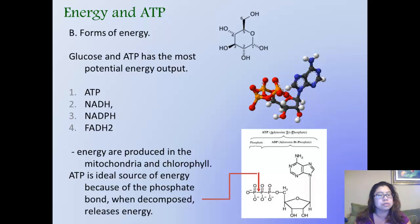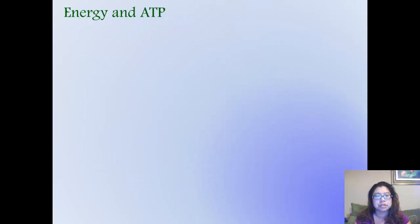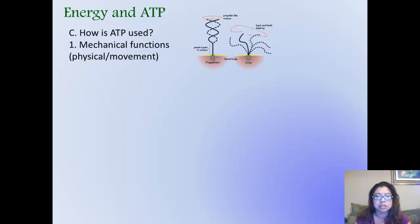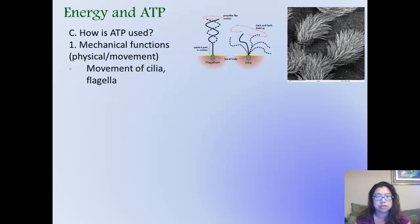How is ATP used? In general, mechanical functions for physical movement for cells in organisms that have flagellum or cilia. Here is a microscopic picture of cilia on an organism. They are used for muscle functions for movement that way, coarse and fine motor skills.